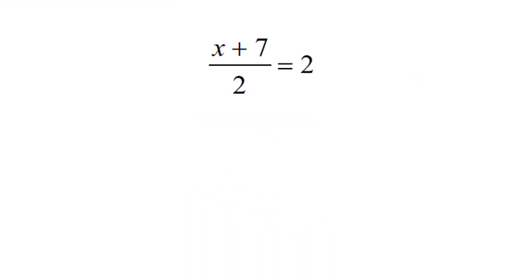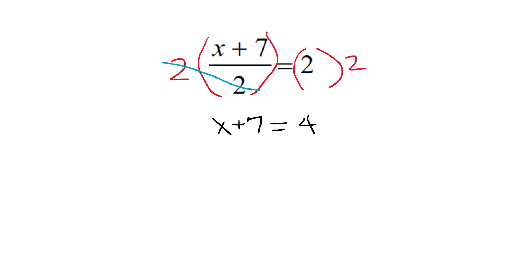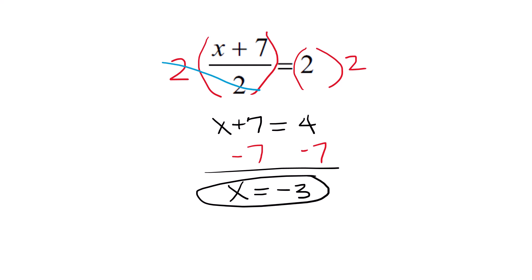This one can be a little tricky. When you look at the left side, the entire x plus 7 is being divided by 2. We have to undo that divided by 2. You undo division with its opposite operation, which is multiplication. So we're going to start by multiplying by 2. What we do to one side, we have to do to the other — it ends up canceling that out. You're not going to touch the x plus 7; you're just going to copy that, and that equals 4 on the other side because 2 times 2 is 4. Now we're going to subtract 7 from both sides, and our final answer is x equals negative 3.